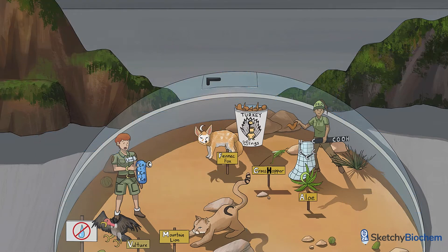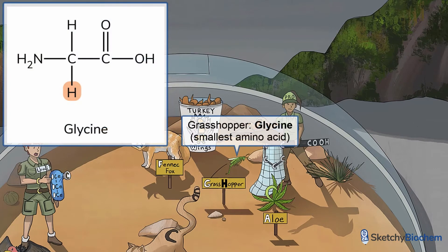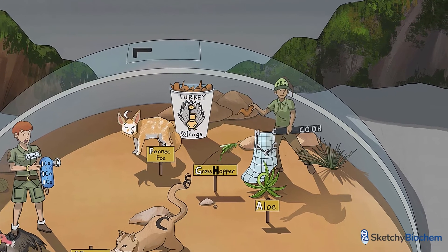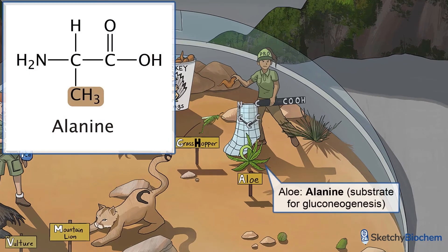Let's go over some specific features you should know. Glycine is the simplest amino acid because its side chain consists of a single hydrogen. As the smallest amino acid, glycine is conformationally flexible — just like the grasshopper — and, due to this property, is found in every third position in collagen. Glycine is also frequently present in hydrophobic areas of cell membranes, and is needed to synthesize purine nucleotides and porphyrin, a component of heme. Let's take a look at this aloe plant representing alanine. Alanine is one of the major substrates for gluconeogenesis and is also important during the Cahill cycle.